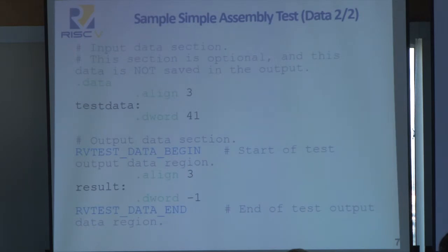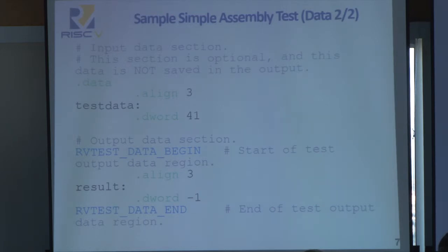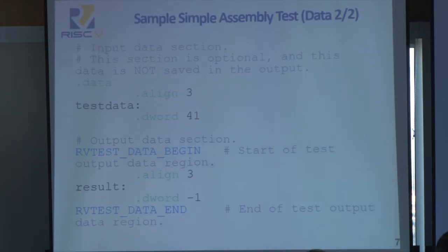The next half of the file defines what data we need to run the program — input data. For just regular data that will not be dumped by the front end server in the signature, you can use the regular assembler directive dot data with dot line commands. Notice, however, we have RV test data begin and RV test data end. All of the data within — in this case just one double word — will be dumped by the front end server to the signature test file for comparison by the user later.